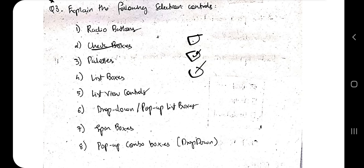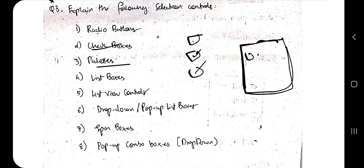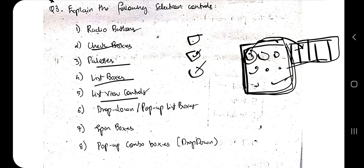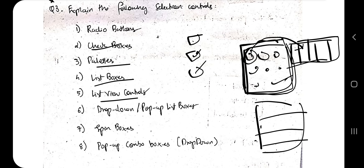Palettes are like a frame containing images, icons, or colors — you click one color and different shades become visible. List boxes contain a list inside a box from which you select items. List view controls are a collection of items consisting of an icon or label from which you can select.